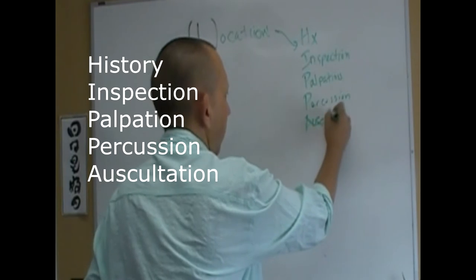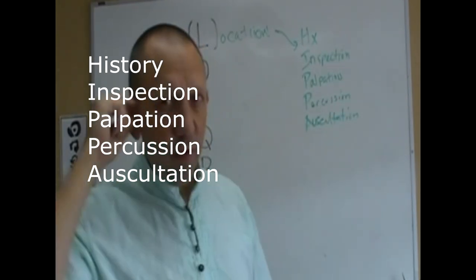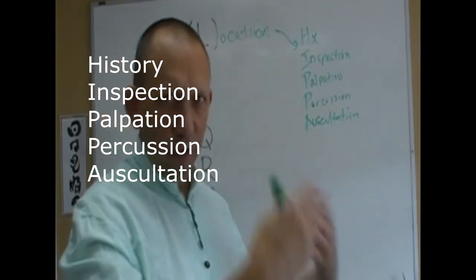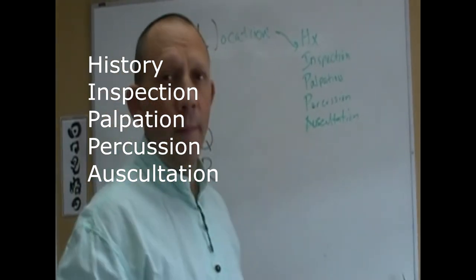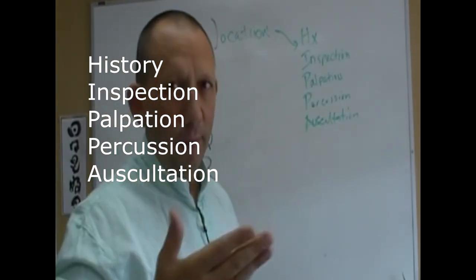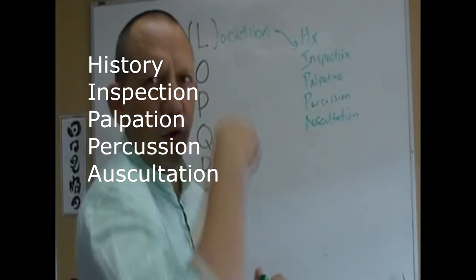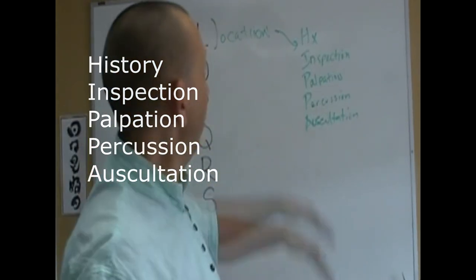The other one is auscultation, which means to listen. Usually with a stethoscope, you listen to their breathing, their stomach, their bowel sounds or gut sounds, their heart. You don't do that with muscles, but what you can hear is crepitus, creaking, sometimes clicking. Maybe they move their shoulder and we'll hear a pop, pop, pop. That brings you back up to your location.